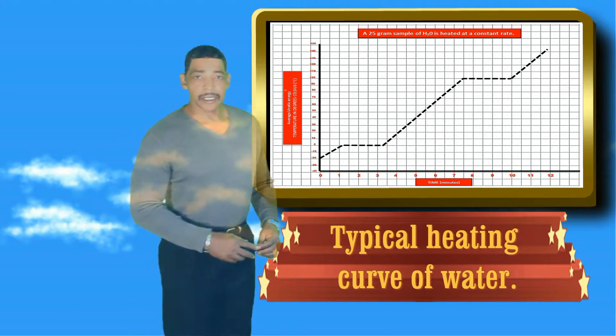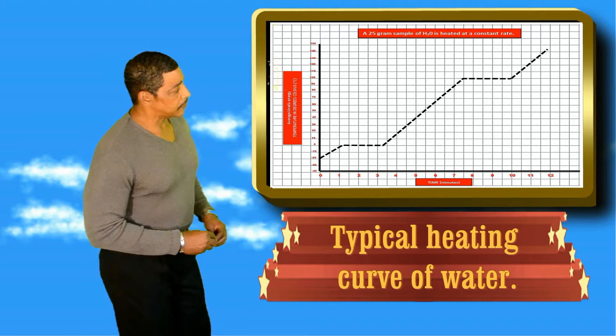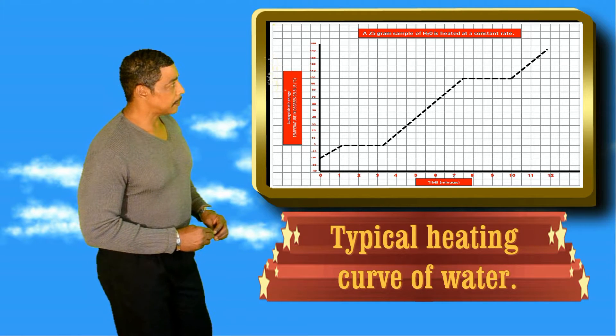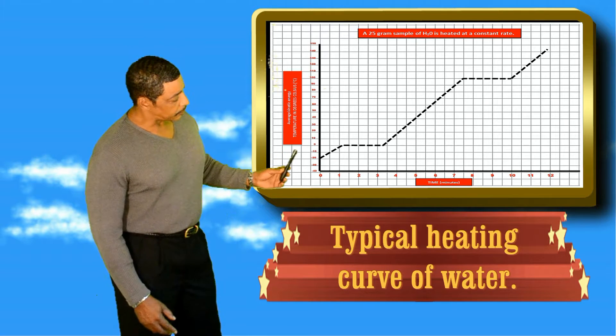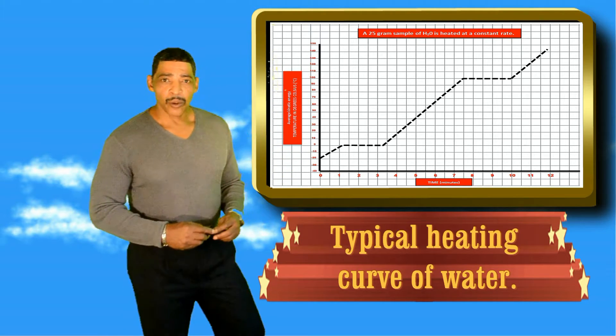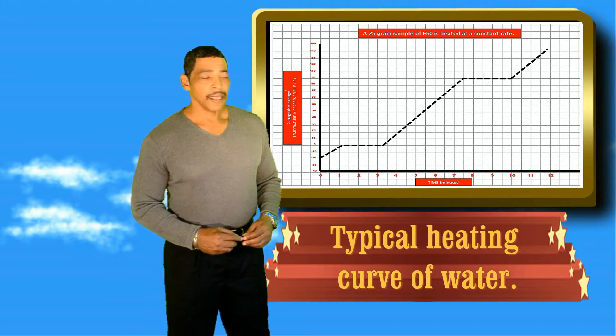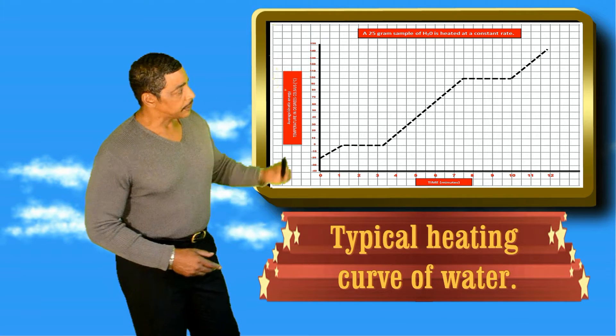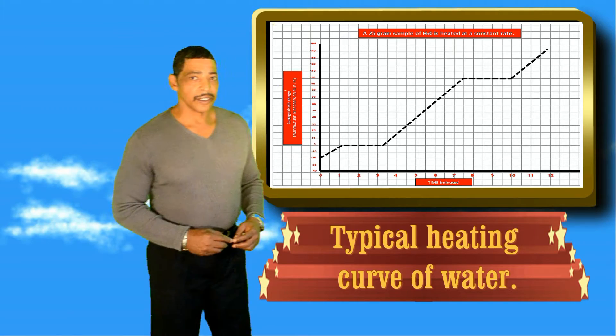A typical heating curve may be plotted for most substances. This image represents the heating curve of water, where its characteristic plateaus occur at zero degrees Celsius and 100 degrees Celsius, where zero degrees Celsius represents the melting point or point of fusion, and 100 degrees Celsius represents the boiling point or the point of vaporization.